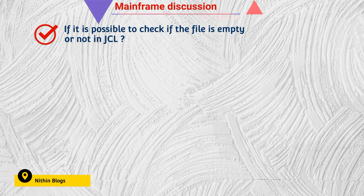Is it possible to check if a file is empty or not in JCL? Yes, it is possible. For example, if we are using VSAM or GDG, the utility we use is IDCAMS. After job completion, if the return code is 4, that means there is a fair chance the file is empty. We can use this to cross-check whether the file is empty in the particular dataset or GDG version.